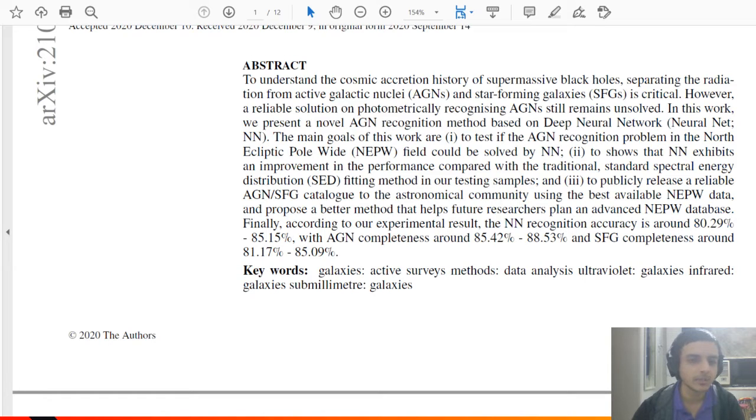Now the main goals of this paper is to test if AGN recognition problem in the North Ecliptic Pole Wide field can be solved using neural network. Second is to show that neural network exhibits improvement in performance compared to traditional standard spectral energy distribution, SED fitting models. These are the statistical models used previously, which is called spectral energy distribution, and they are used to test out all these samples that we get from the night sky.